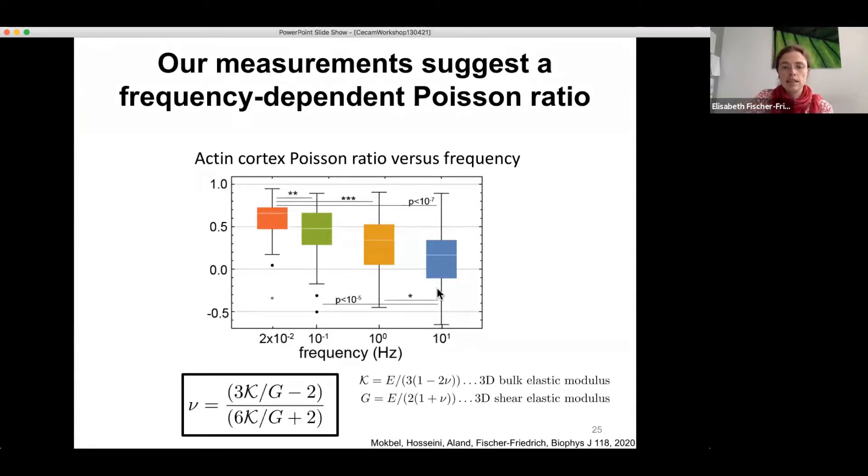So can we understand this trend? Well, in order to rationalize this, it's insightful to look at this formula here. So the Poisson ratio now as a function of the three-dimensional bulk elastic modulus, curly K, and the three-dimensional shear elastic modulus. And in particular, you can appreciate if curly K is much larger than G, then we approach 0.5. If this ratio drops, then nu goes further down and eventually would approach minus one.